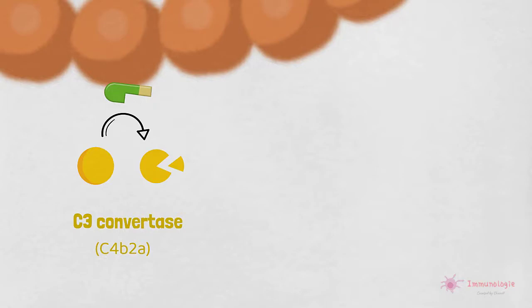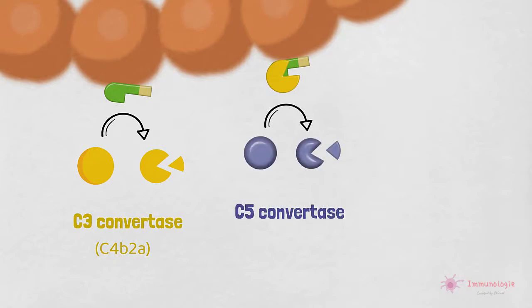Et à partir de ce moment-là, la voie des lectines utilise tous les mêmes composants en aval de la voie classique. Et la C5 convertase de la voie des lectines, comme celle de la voie classique, est également composée de C4B2A3B.